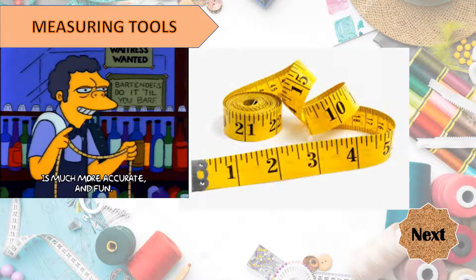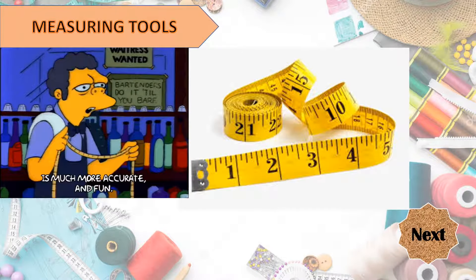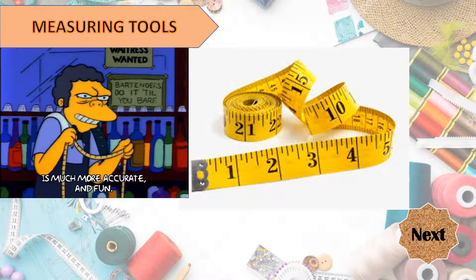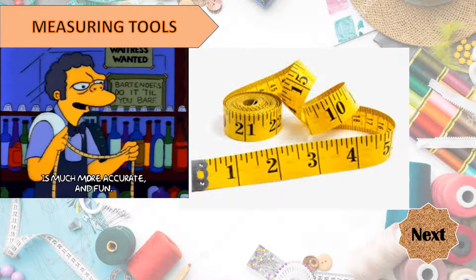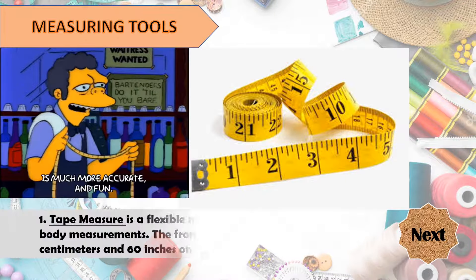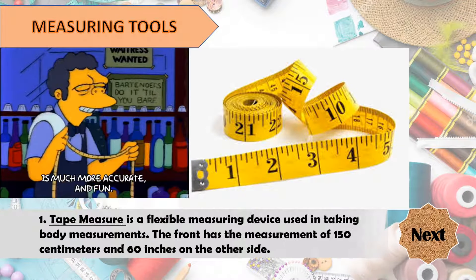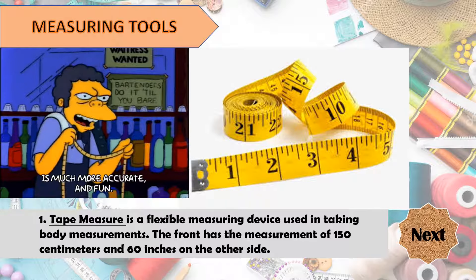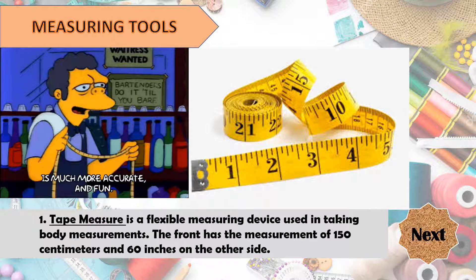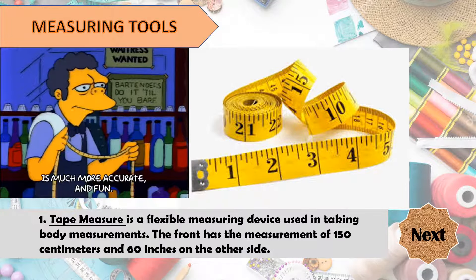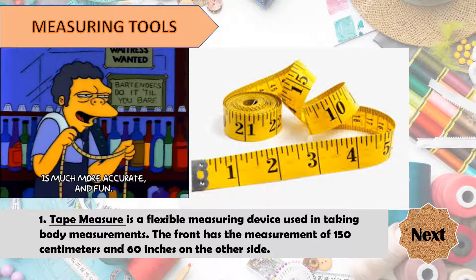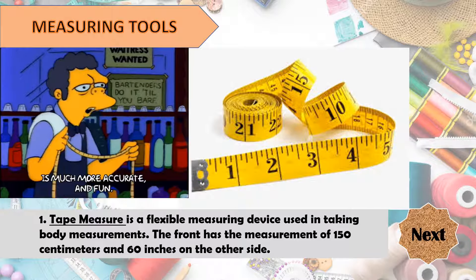Let's try to identify what measuring tool is illustrated on the picture. Great job! This is a tape measure. It is a flexible measuring device used in taking body measurements. The front has the measurement of 150 centimeters and 60 inches on the other side.